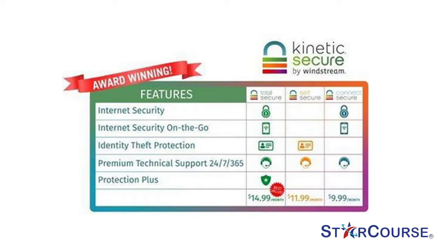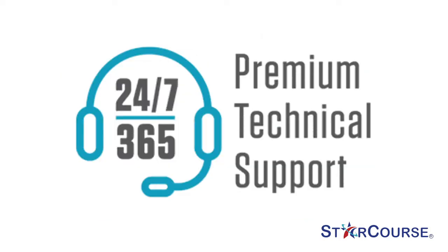The Kinetic Secure Packs provide all the core security, support and protection for the Internet user and their connected devices. Total Secure contains every product of the Secure Package including Internet security within the home and on-the-go mobile apps, premium technical support, ID theft protection and Protection Plus with wire maintenance — includes parental controls, pausing Wi-Fi, bedtimes, content filtering and more. Self-Secure includes ID theft protection and premium technical support only. Connect Secure features Internet security as its best-selling point, allowing the customer to monitor their children's online activities, and also includes premium technical support. Great news — premium technical support is now included in all Secure Plans, 24/7, 365 days per year.